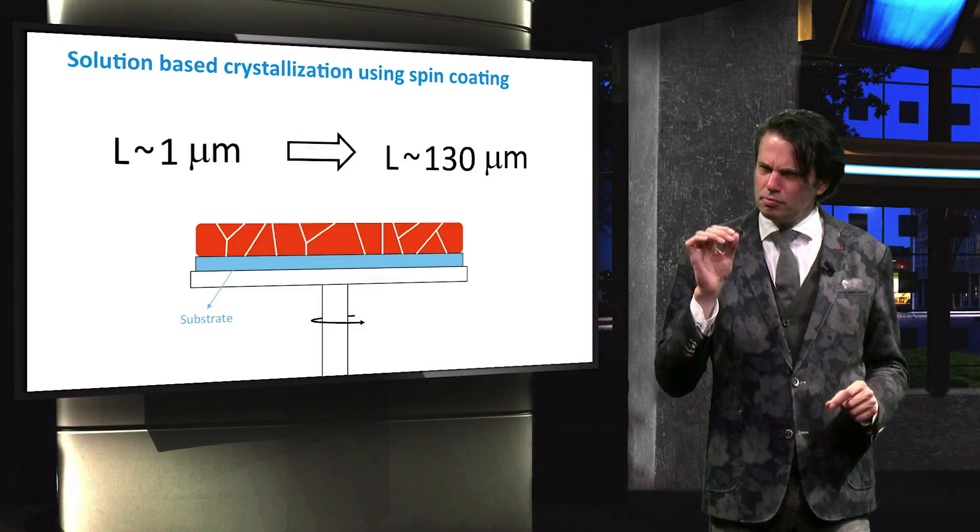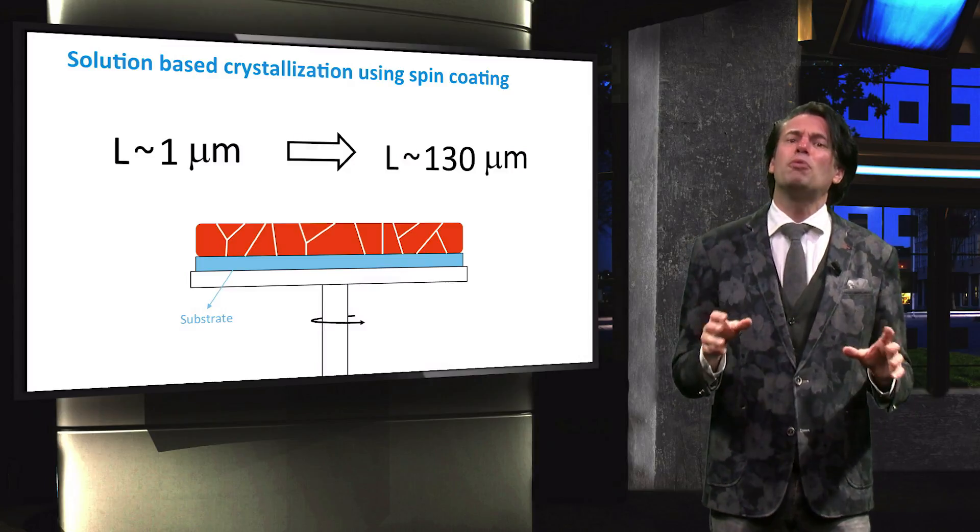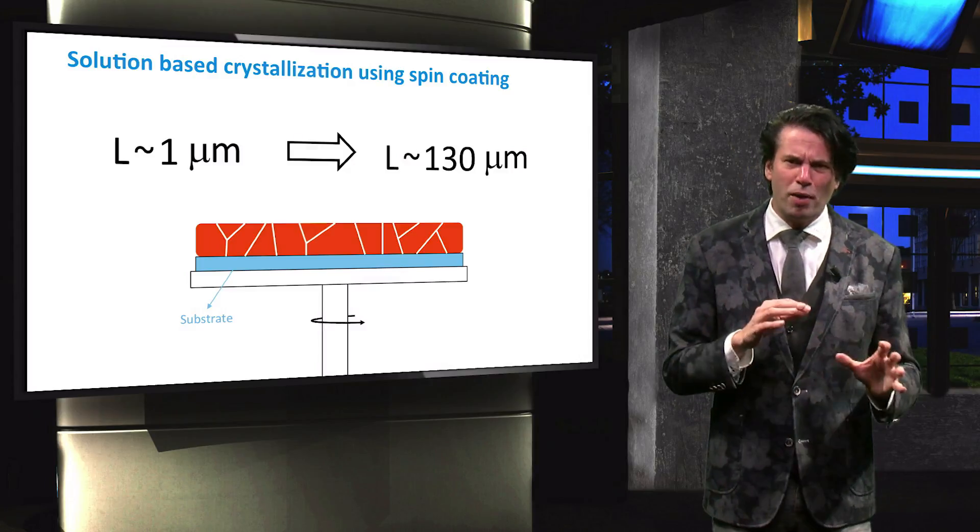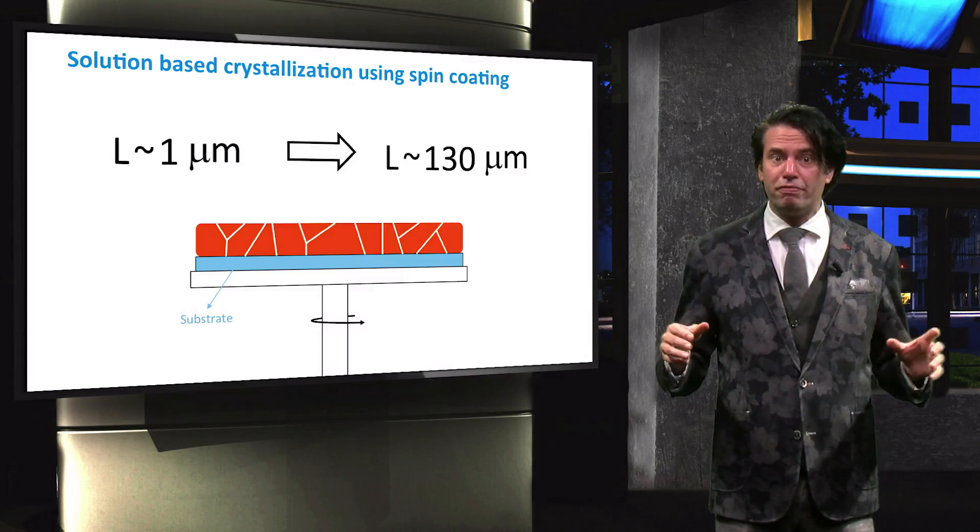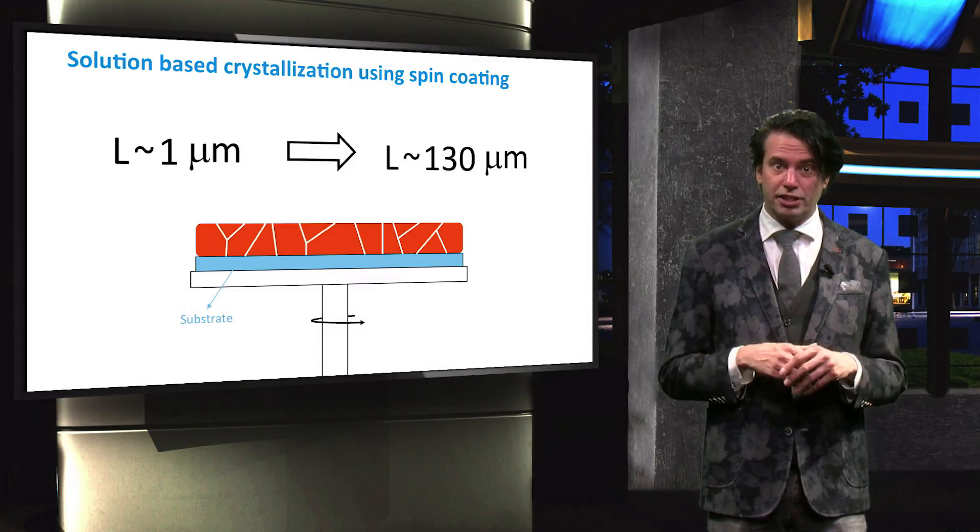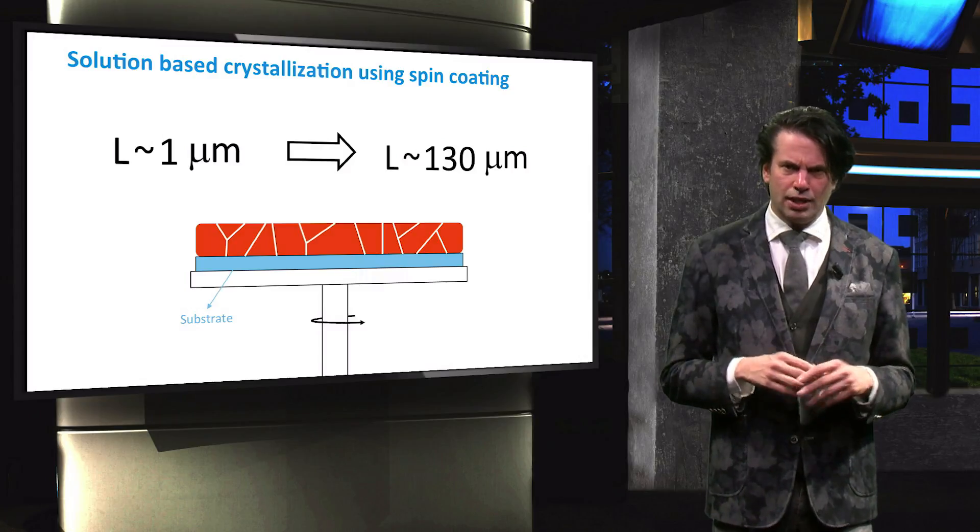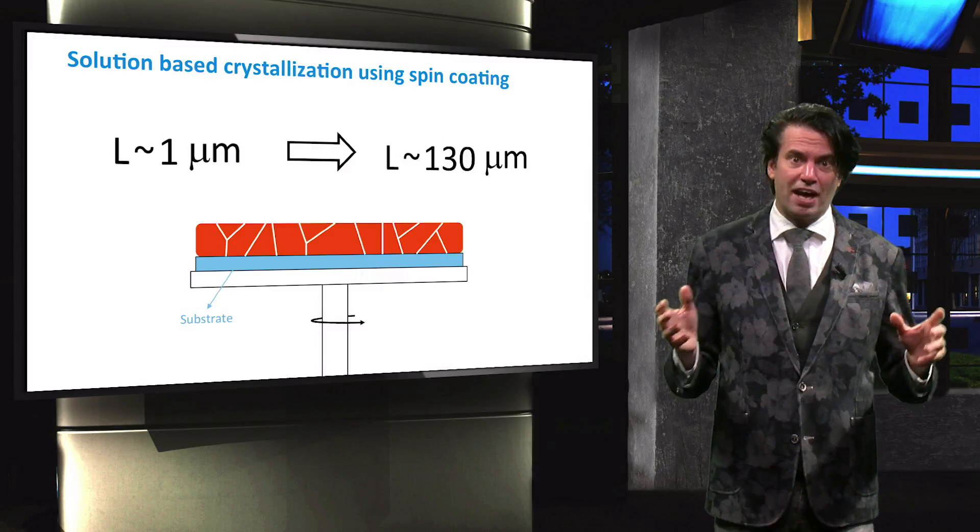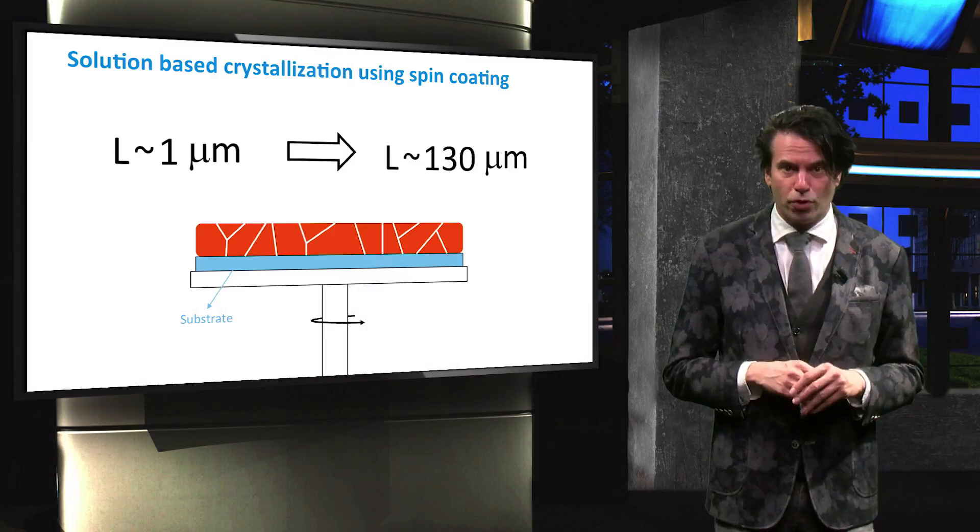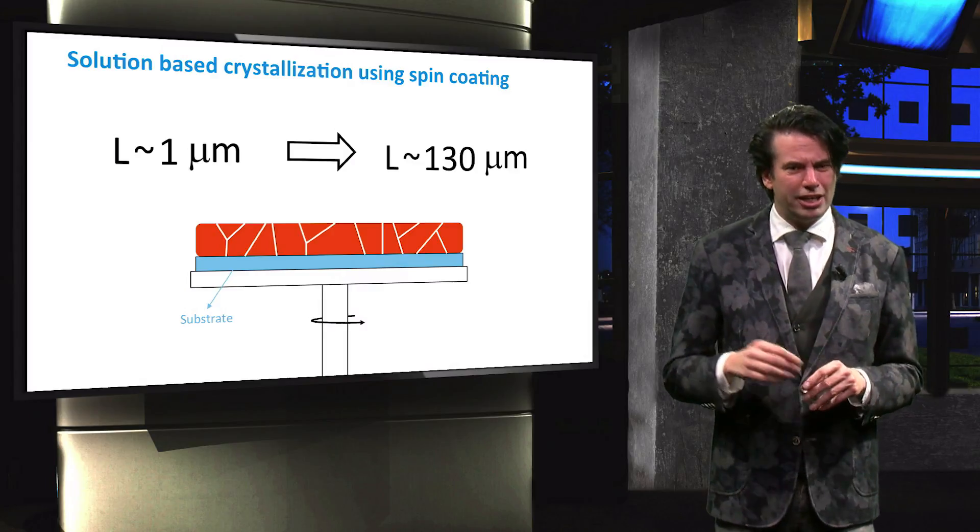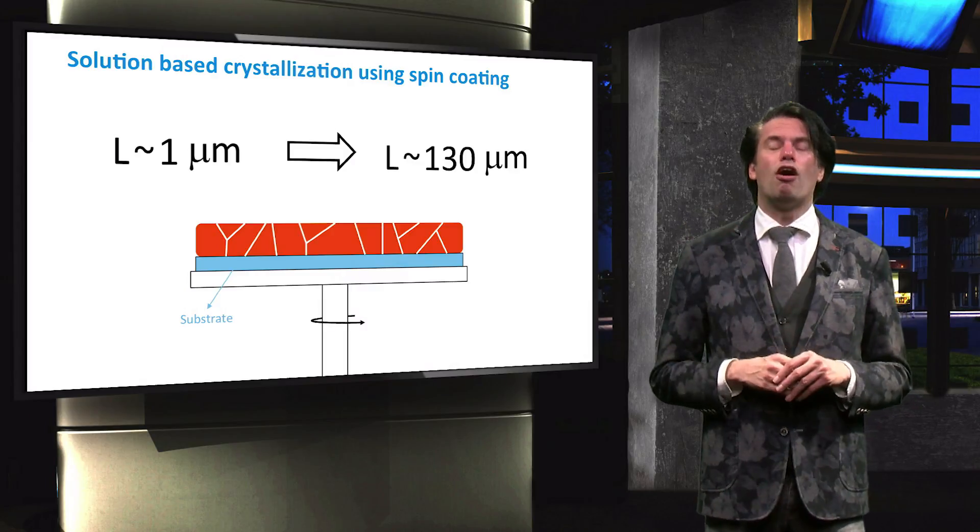However, some studies suggest that in some halide perovskite materials, the grain boundaries can act as conduction paths, which benefit the transport of the charge carriers in the absorber layer again. The exact role and effects of the grain boundaries on the performance of halide perovskite solar cells is therefore still a subject of research.